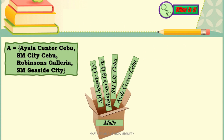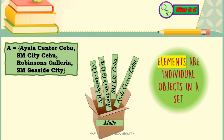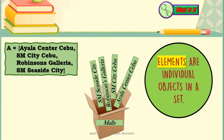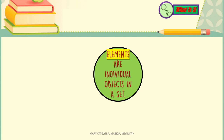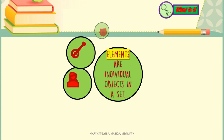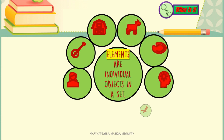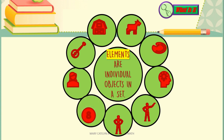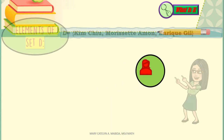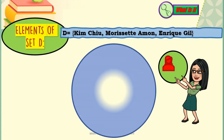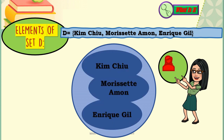Let us take the set of malls in Cebu City. The individual objects in a set are called elements, denoted by the membership symbol. The elements of set A are SM Seaside City, Robinson's Galleria, SM City Cebu, and Ayala Center Cebu. Always remember that elements in a set can be a name of a person, things, place, animals, colors, ideas, actions, figures, numbers, etc. For example, set D has the elements Kim Chu, Morissette Amon, and Enrique Hill — a set that contains names of persons.